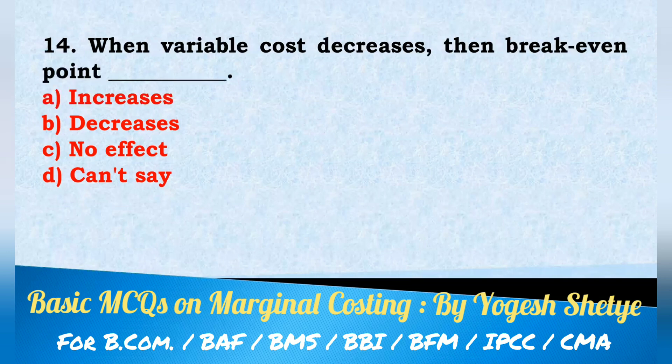Question 14: When variable cost decreases, then break-even point — increases; decreases; no effect; can't say. Answer: when variable cost decreases, break-even point decreases.